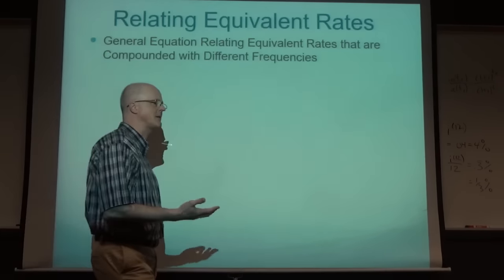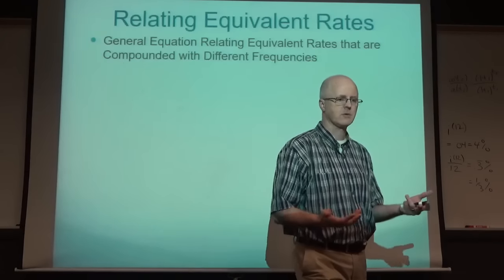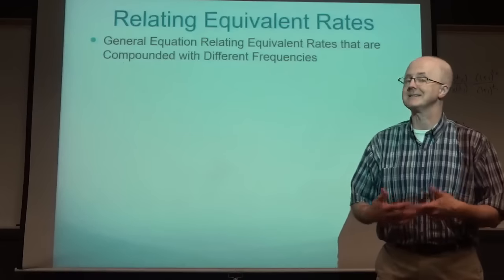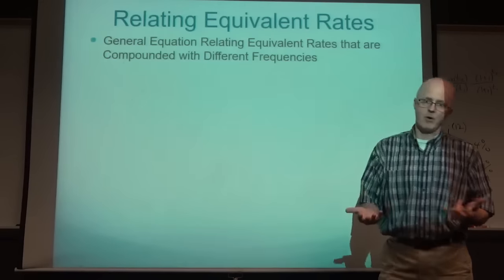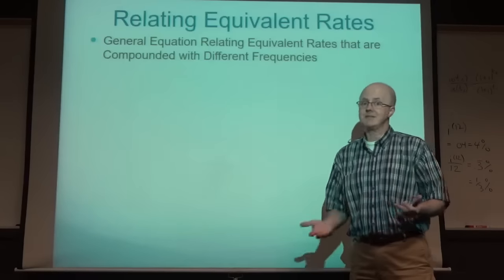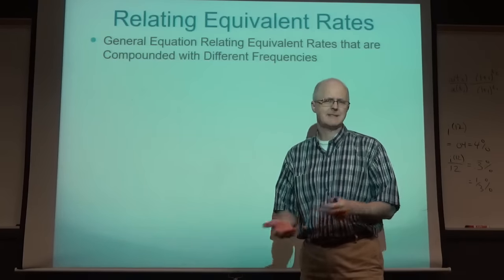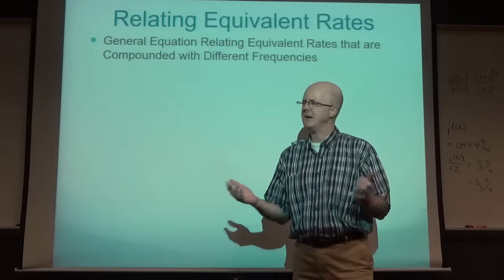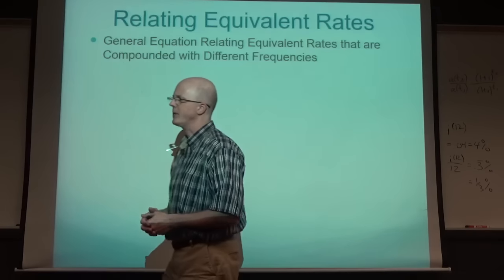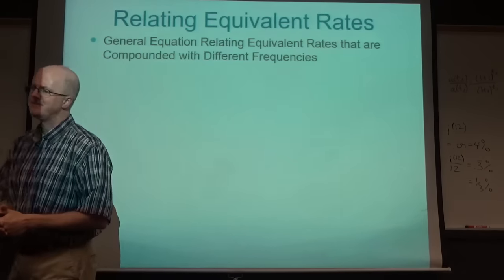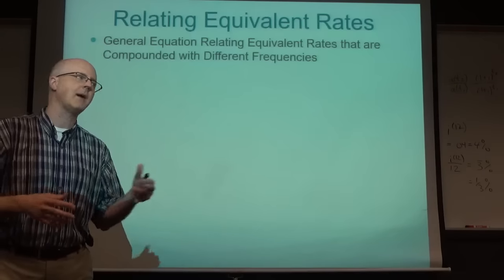Interest can be compounded in various ways: quarterly, monthly, semi-annually (twice a year), annually, or daily (N=365, or maybe 360 to keep it a nice round number). By varying the corresponding nominal rate, you can get equivalencies between different compounding frequencies.